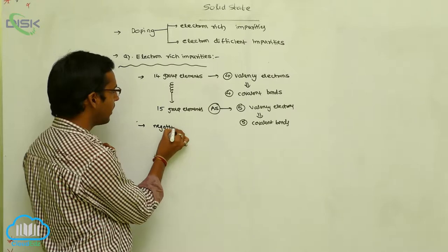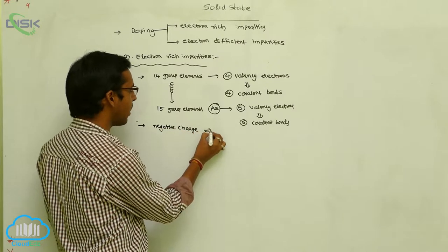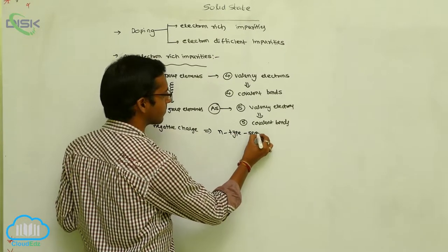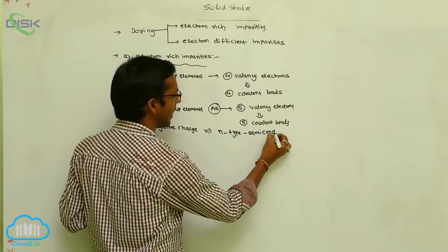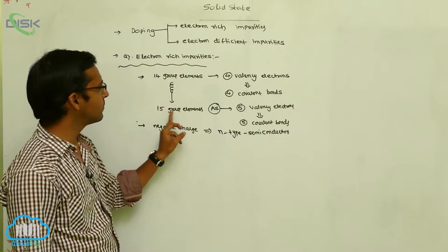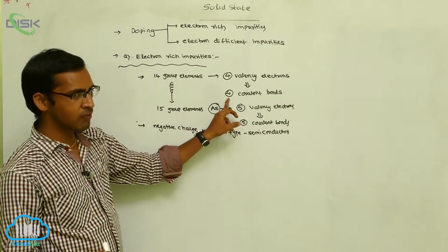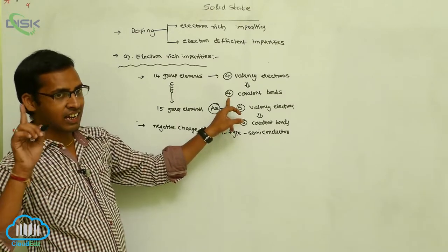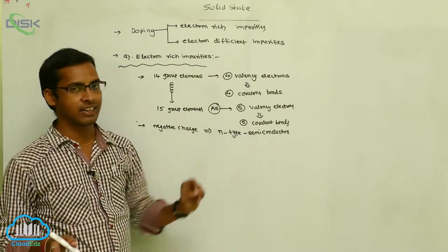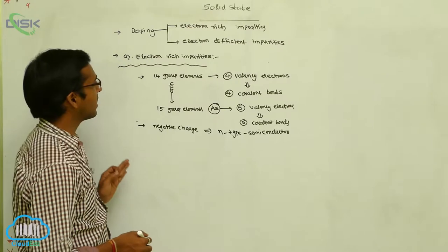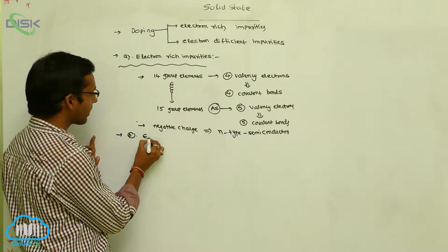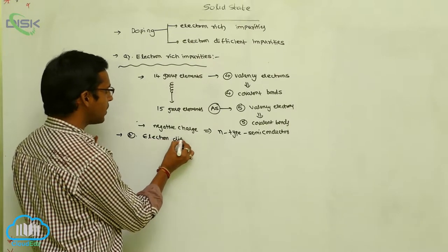That extra electron is delocalized around the nucleus. Since electrons carry negative charge, these negative charged particles give rise to what is called n-type semiconductors. The addition of 14th group elements with 15th group elements forms four covalent bonds with one extra electron carrying negative charge — that is called n-type semiconductor. This is our electron-rich impurity.